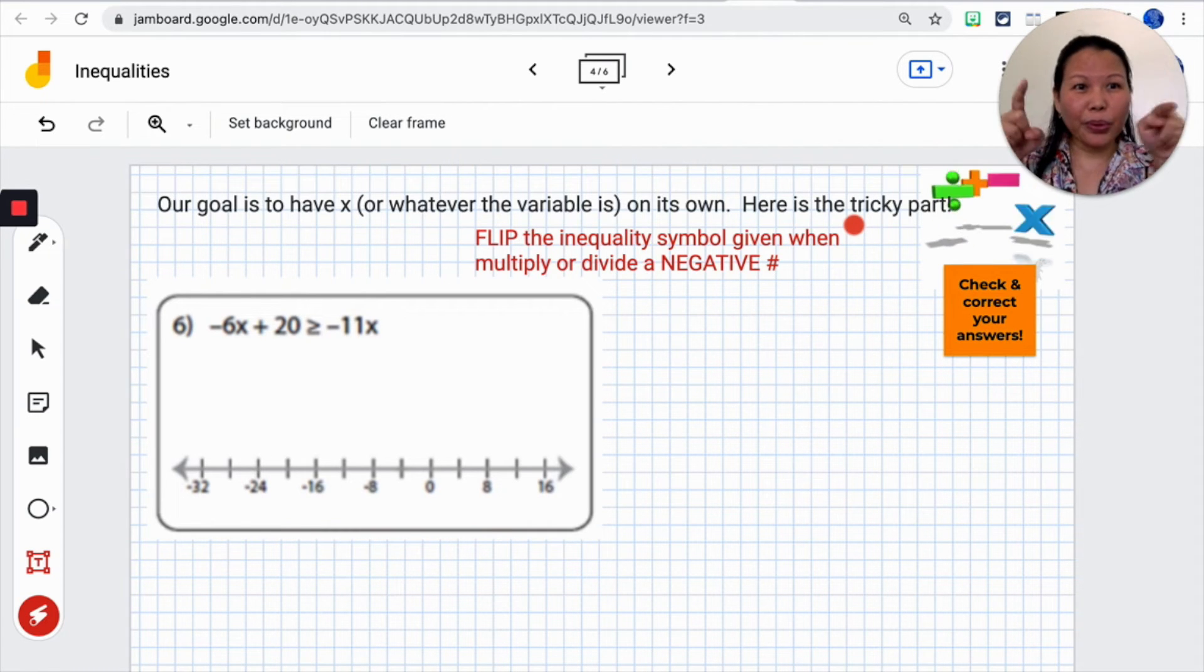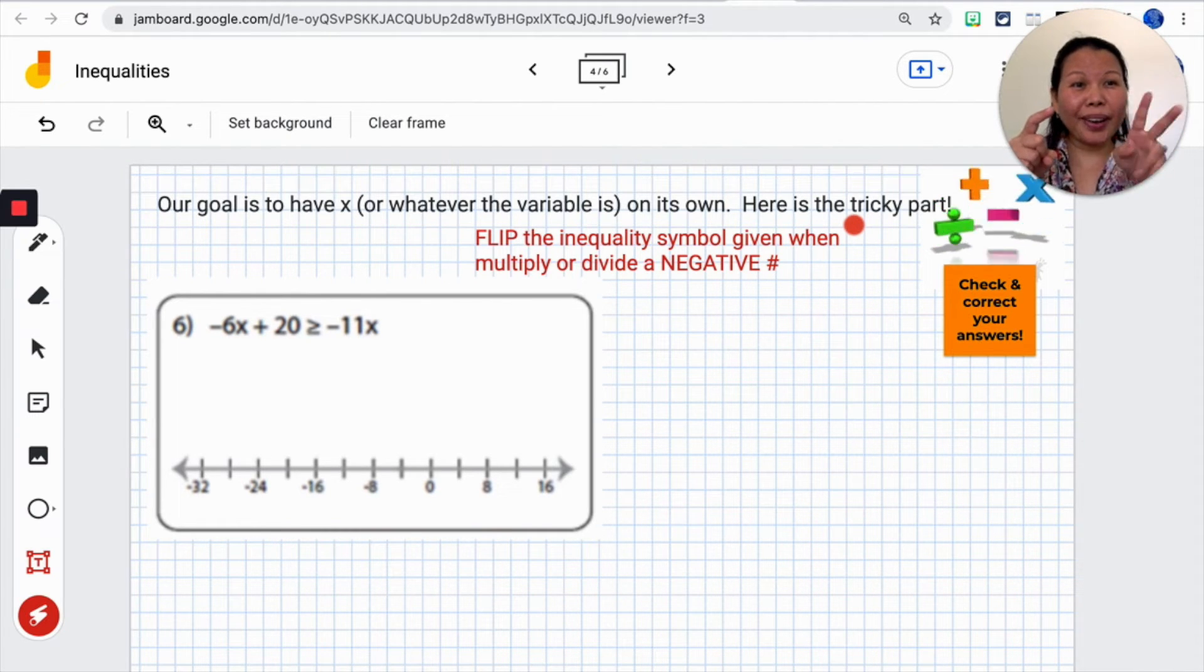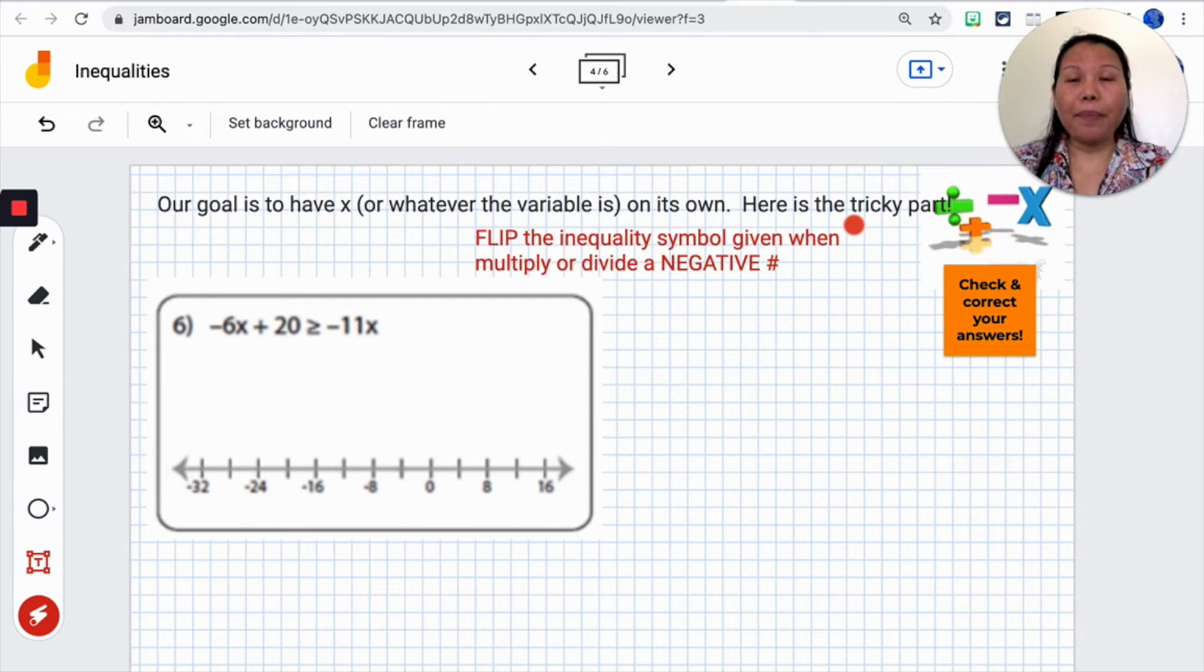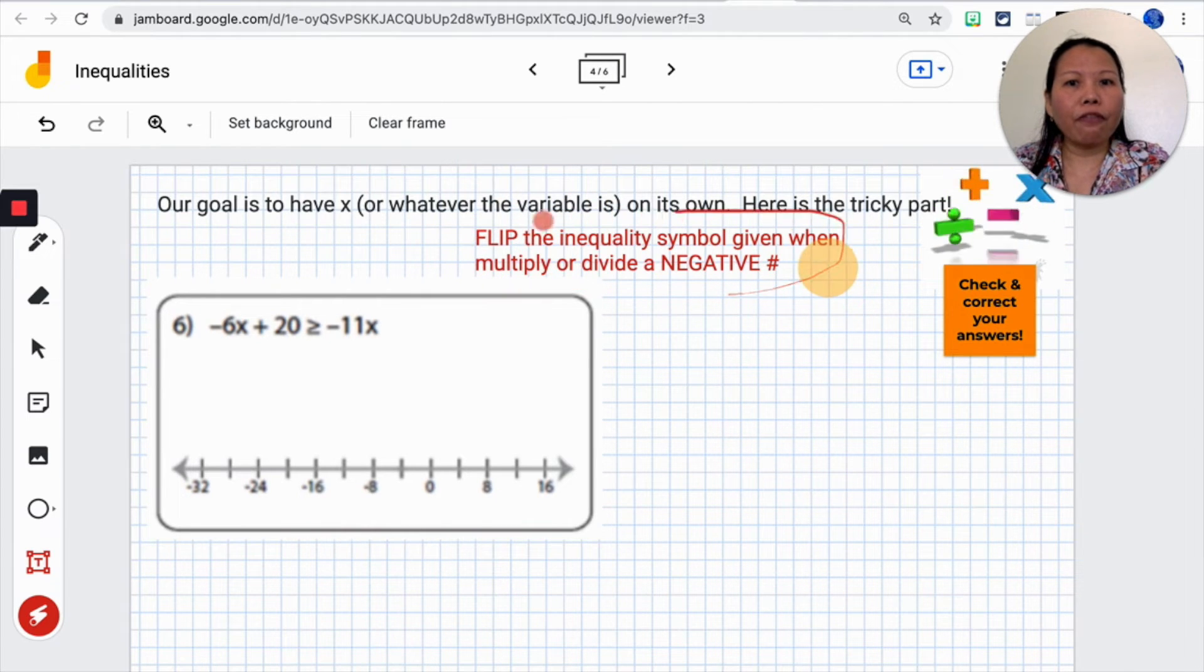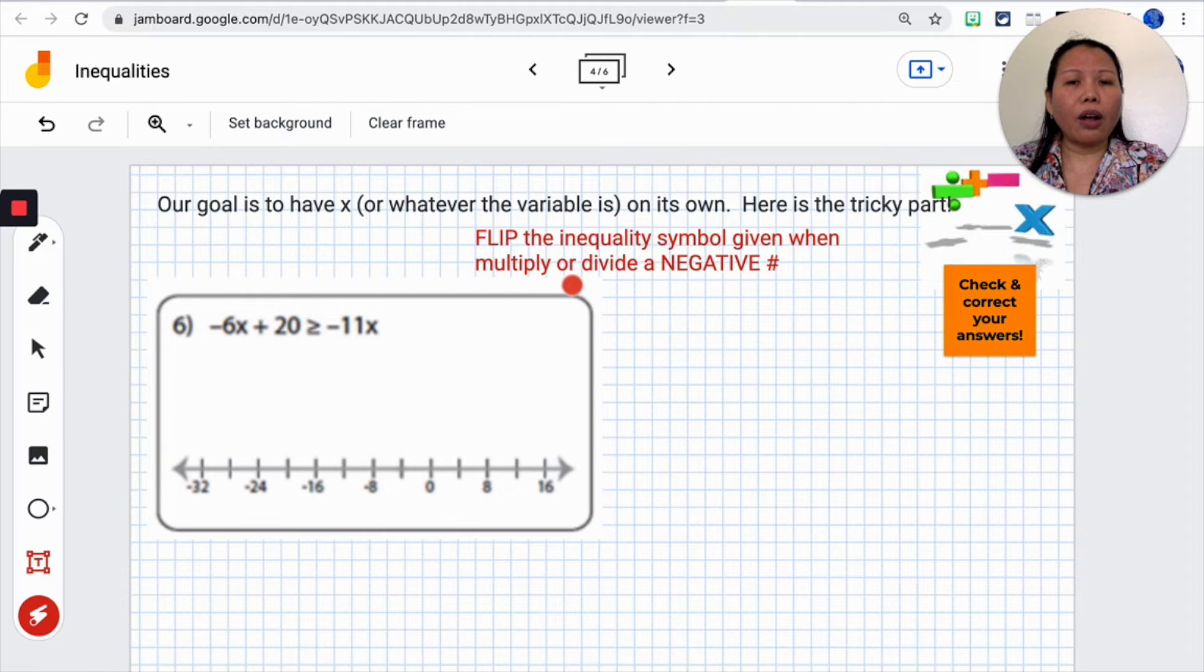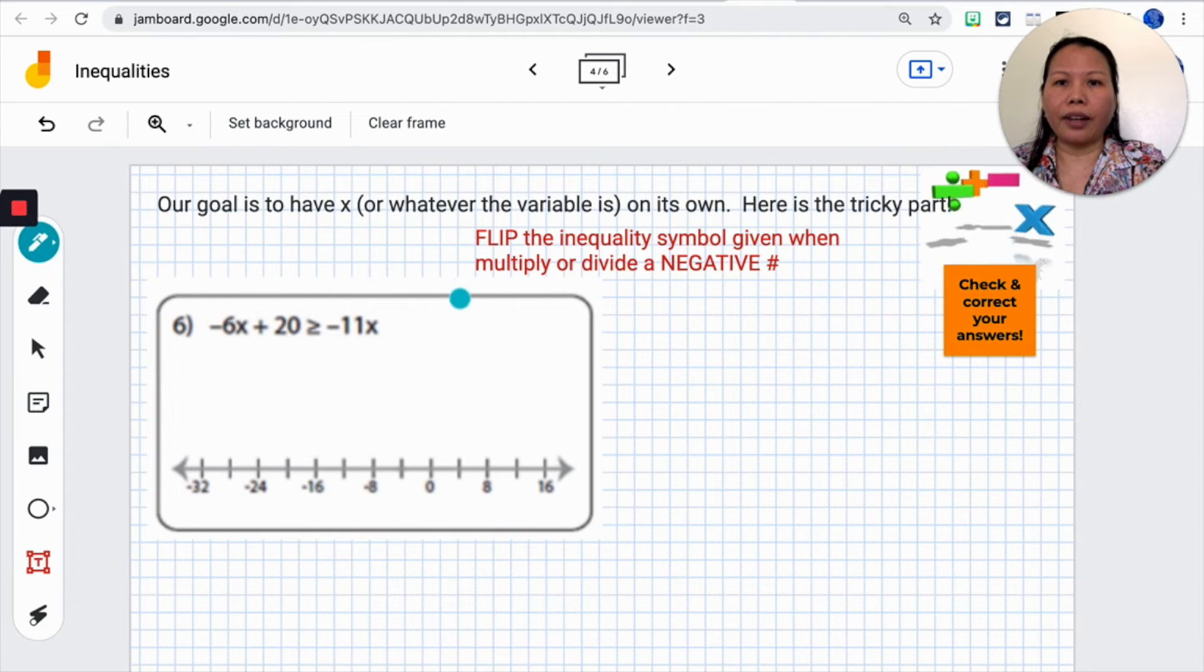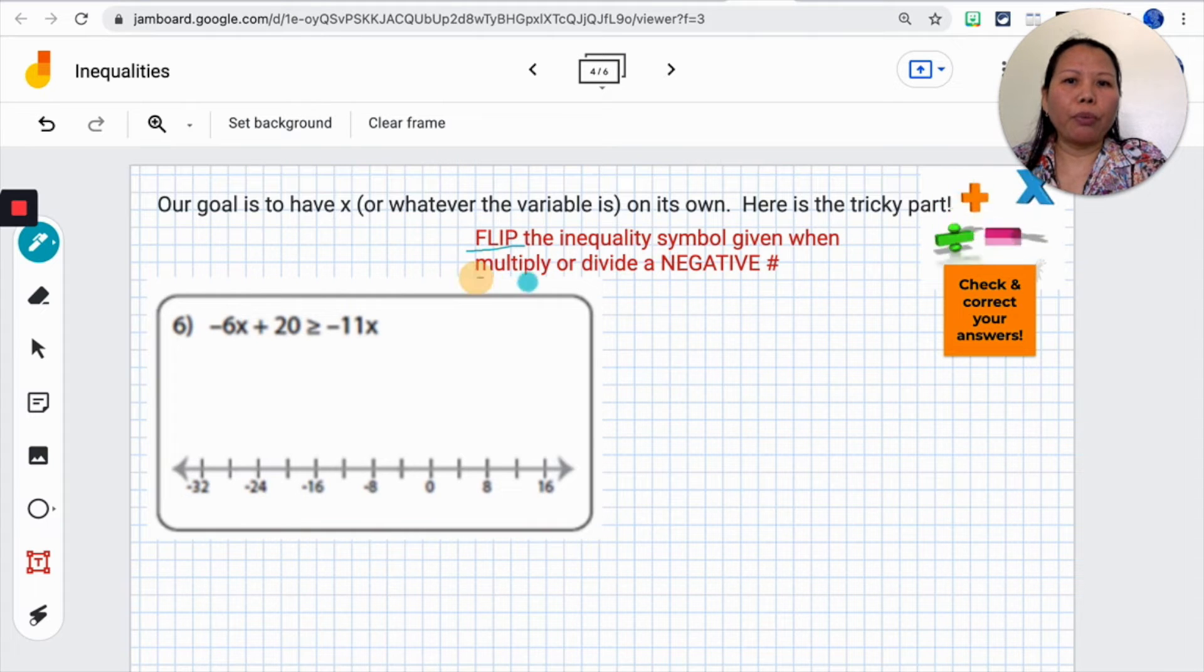But with the equal sign, remember it's two equal lines. So two straight lines. When it flips, it's not going to make a difference. But with the inequality, it would. This is the part that I put in red right here. It said, flip the inequality symbol given when you multiply or divide a negative number. And this is the very important part.